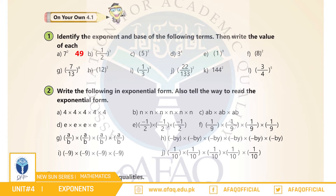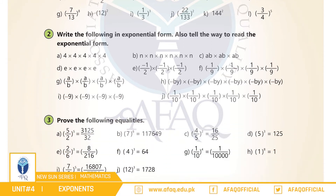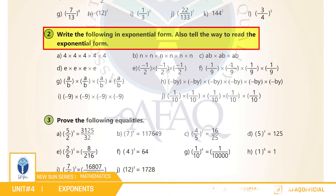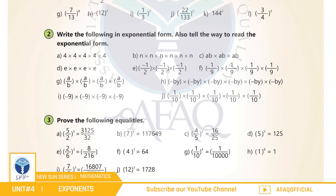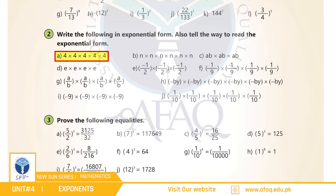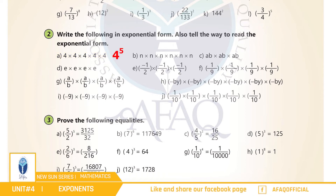اسی طرح سے اگلے parts آپ نے خود حل کرنے ہیں۔ Question number 2: write the following in exponential form, also tell the way to read the exponential form. (a) 4 multiplied by 4 multiplied by 4 multiplied by 4 multiplied by 4 multiplied by 4 — تو بچو اس کا exponential form ہوگا 4 to the power of 5 اور اس کی value بنی 1024۔